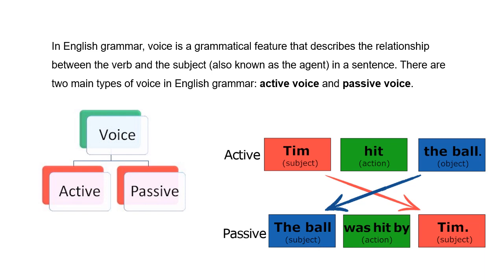For example: 'You hit the ball.' اس میں 'you' subject ہے اور وہ action perform کر رہا ہے — وہ ball کو hit کر رہا ہے۔ جب اسی جملے کا passive voice بنائیں تو ball کو آگے کر دیتے ہیں اور 'you' action receive کرتا ہے۔ یہی فرق ہے، جسے ہم آگے مزید clear کریں گے۔